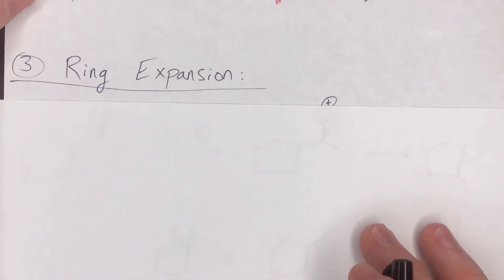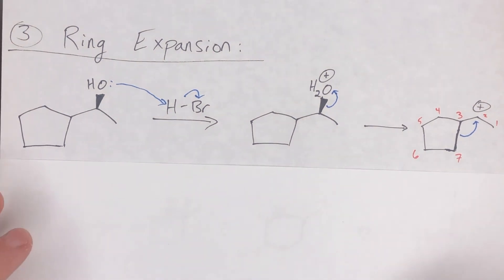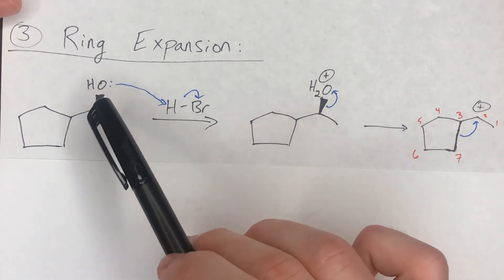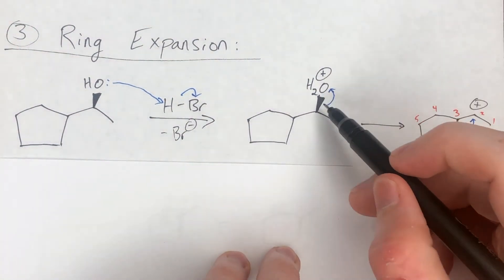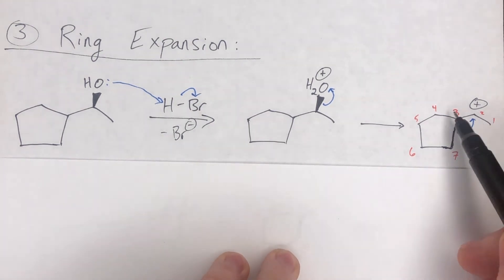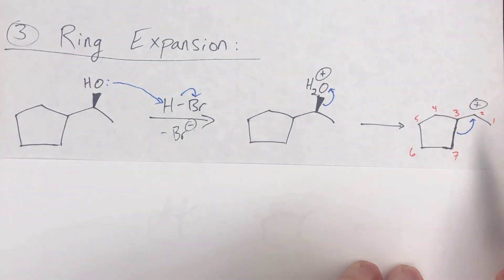Lastly, we have ring expansions — these are just special kinds of alkyl shifts, but they look very different, which is why I treat them as their own category. Again using an alcohol to start, this is an SN1 reaction proceeding through dehydration. First you protonate the OH in a Lewis base–Lewis acid step, generating Br⁻. Then the protonated alcohol, OH₂⁺, is a good leaving group. It leaves, creating a secondary carbocation at position two — bound to carbon three and carbon one.